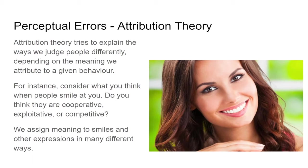Attribution theory tries to explain the ways we judge people differently depending on the meaning we attribute to a given behavior. For instance, when you think of people smiling at you — do you think they are cooperative, exploitative, or competitive? If we see someone smiling at us, we're probably going to see them as being cooperative and friendly. We assign a lot of meaning to body language, and a smile is a very strong positive body language message. This girl might be the worst person ever brought into the organization, but that smile is throwing us off.